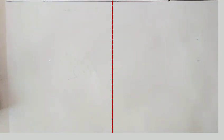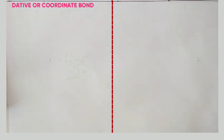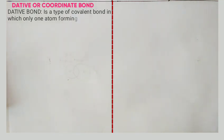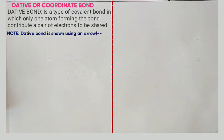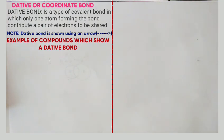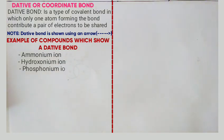Next we want to look at what is called a dative bond or coordinate bond. A dative bond is a type of covalent bond in which only one atom forming the bond contributes a pair of electrons to be shared. A dative bond is usually shown using an arrow, unlike a regular covalent bond which uses a dash. Examples of compounds showing dative bonds include the ammonium ion, hydroxonium ion, phosphonium ion, carbon monoxide, aluminum chloride dimer, and sulfur dioxide.